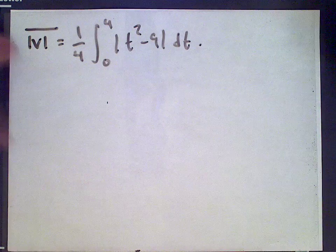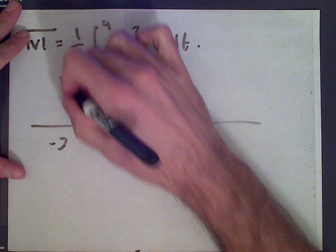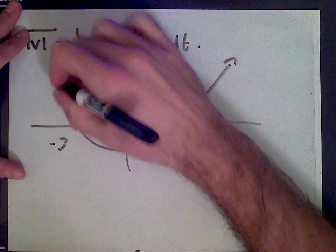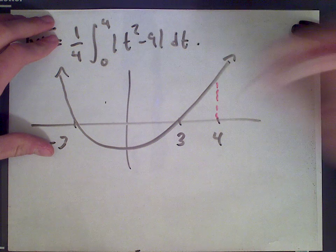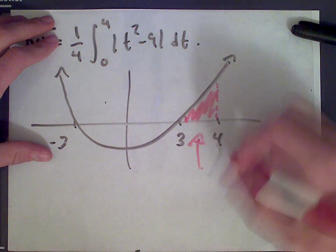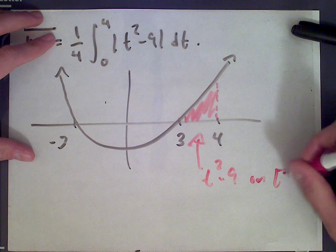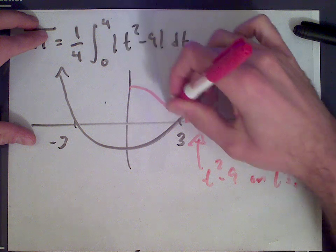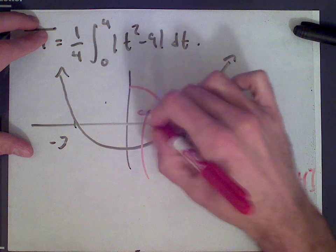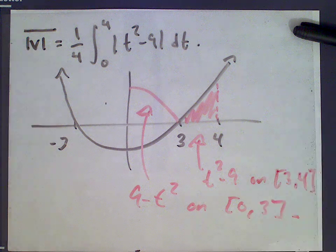This amounted to finding where t² - 9 is positive on the interval. t² - 9 looks like a parabola, and at t = 3 it crosses zero, with t = 4 somewhere to the right. So the function is negative from 0 to 3 and positive from 3 to 4. Since we want the absolute value, we flip the negative part, so 9 - t² on [0, 3] looks like a positive hump — that's why and how we split that interval.